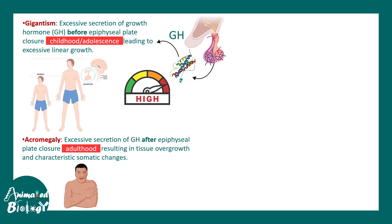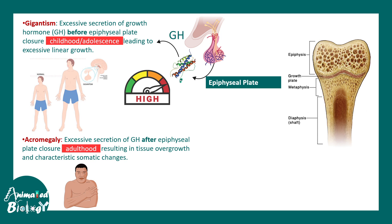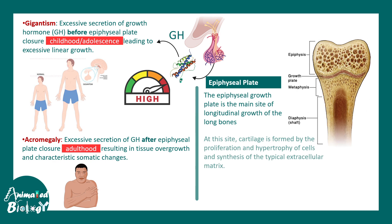More technically, there is an epiphyseal plate in the bone that closes after adolescence. This epiphyseal growth plate is the main site of longitudinal growth in long bones — cartilage is formed by proliferation and hypertrophy of cells, which synthesize extracellular matrix and deposit it on bone, elongating it over time. Epiphyseal plate closure happens late in adolescence, so excess GH before that leads to gigantism, and after that leads to acromegaly.